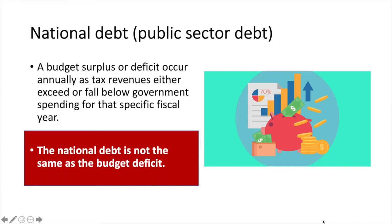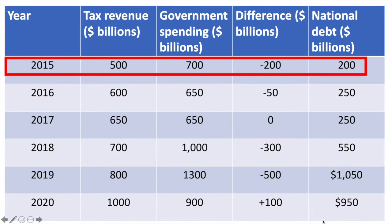To help clarify, let's look at some made up data to improve your understanding. Assuming that as of 2015 the government had no national debt and plans to pay down the debt in years it runs a surplus: in fiscal year 2015, this hypothetical government collected $500 billion in tax and spent $700 billion, resulting in a budget deficit of $200 billion, so the national debt increased to $200 billion. This is because the government must borrow to finance a budget deficit.